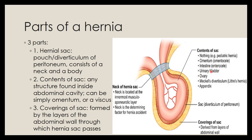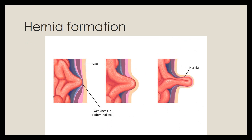In pediatric hernias, the sac can be empty — just an outpouching of peritoneum. Sometimes we might have omentum, intestine, viscera such as the urinary bladder, ovaries, or appendix inside the hernial sac. The last part of the hernia are the coverings of the sac, formed by the layers of the abdominal wall through which the sac passes. The neck is at the innermost musculo-aponeurotic layer and is the determining factor for hernia accidents such as obstruction or strangulation.